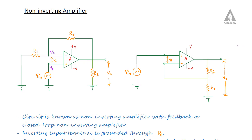In this lecture we are going to discuss about the non-inverting amplifier. The non-inverting amplifier means we are applying the input signal into the non-inverting terminal, that is the positive input terminal of the operational amplifier. The inverting terminal is grounded through R1 resistor, and the output voltage V0 is fed back to the inverting terminal through R1 resistor.